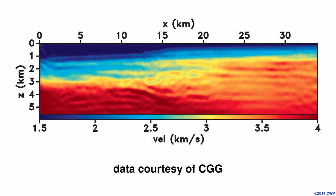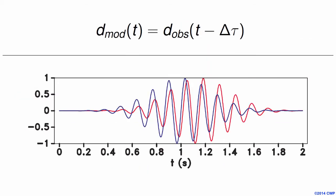In wave field based tomography, as Paul introduced in the previous talk, we can take advantage of different sensitivities of objective functions. Some objective functions are better for retrieving some parts of the model, and others improve other parts, so we have complementary contributions from each objective function. Let me illustrate this with a very simple 1D example, simpler than what Paul showed before.